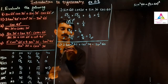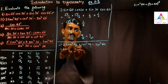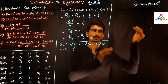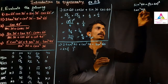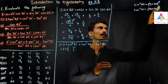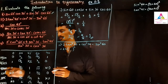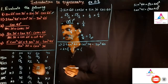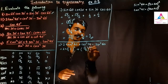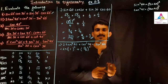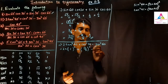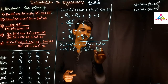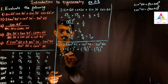Substituting the values: 2 × (tan 45°)² + (cos 30°)² − (sin 60°)². Tan 45° = 1, so tan² 45° = 1² = 1. Cos 30° = √3/2, so cos² 30° = (√3/2)². Sin 60° = √3/2, so sin² 60° = (√3/2)².